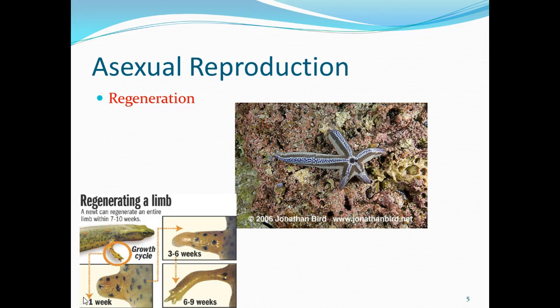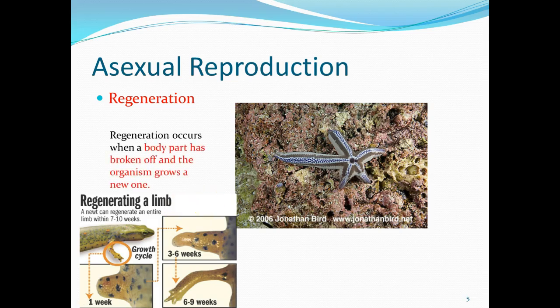Another form of asexual reproduction is regeneration. Regeneration occurs when part of the organism is cut off and the organism can grow a new part. One of the most obvious examples is the starfish — if you cut off the arm of a starfish, the starfish grows its arm back. But in some organisms, cutting off the arm can actually cause that cut-off arm to regrow a whole new starfish, so now we have two separate organisms.